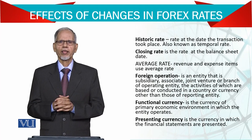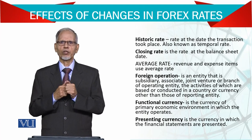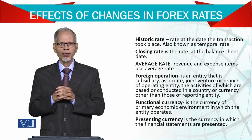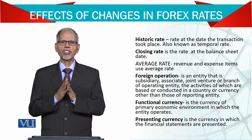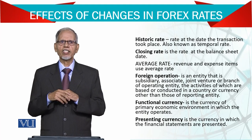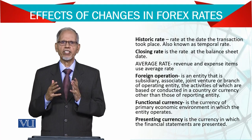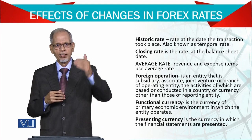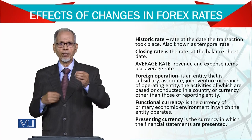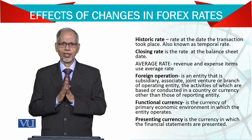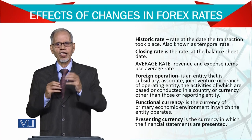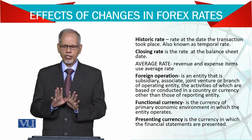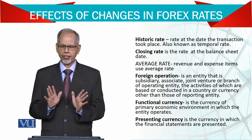Average rate bhi isliye hota hai ki agar aap ke paas puri trial balance hai, toh us mein aap ki income bhi hai, expense bhi hai, asset bhi hai, liabilities bhi hai, equity bhi hai. Toh jahan tak revenue aur expense ki baat hai, it is allowed ke us ke liye aap average rate use kar lein. Average rate kaise nikalen? Normally opening plus closing divide by two, lekin exactly aise nahi hota — agar bara mahine hain toh bara mahine ke end of rate, beginning and end, lekar phir ek rate nikala jata hai. Lekin it is given in the exam.